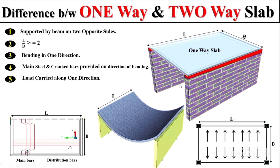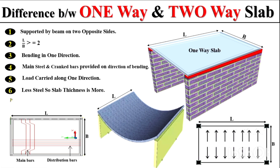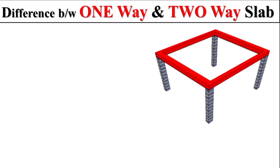In a one-way slab, we normally design only the slab main reinforcement, so the total quantity of steel in the slab is less. That's why we normally take the slab thickness to be more, to resist the total stresses on the slab. Also, the deflected shape of a one-way slab caused due to bending is called a cylindrical shape.